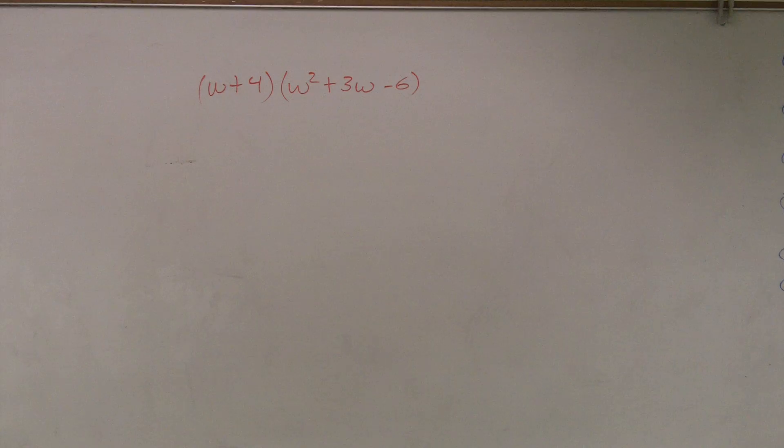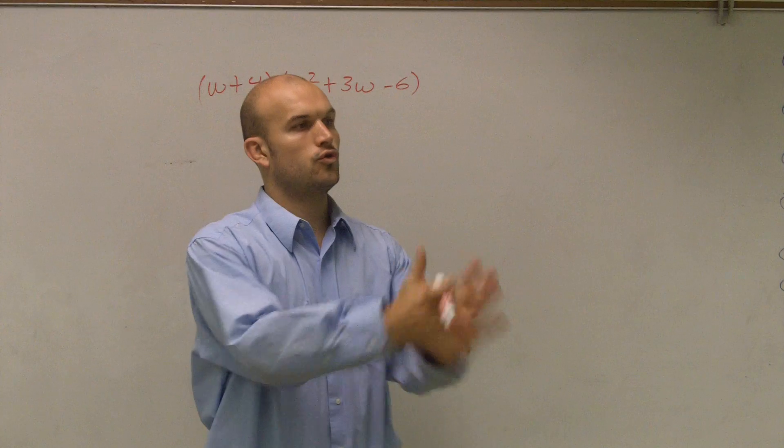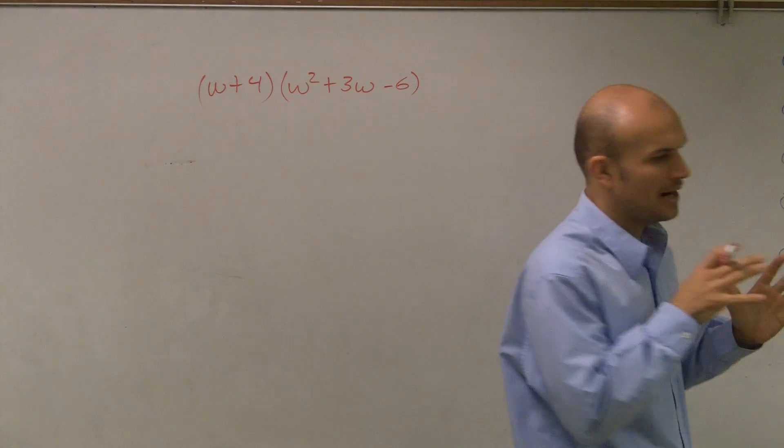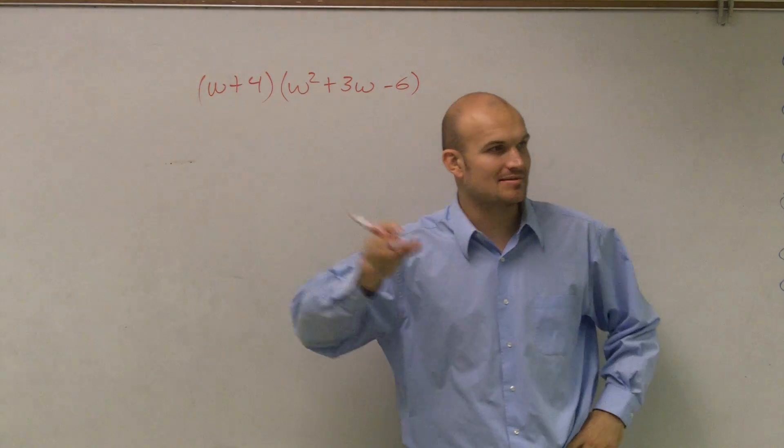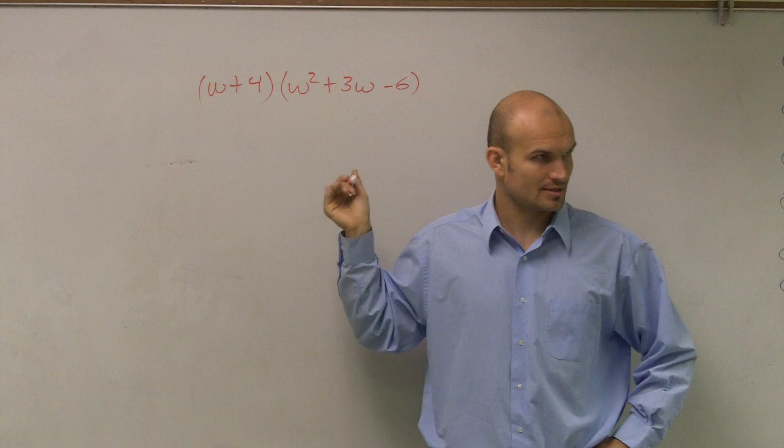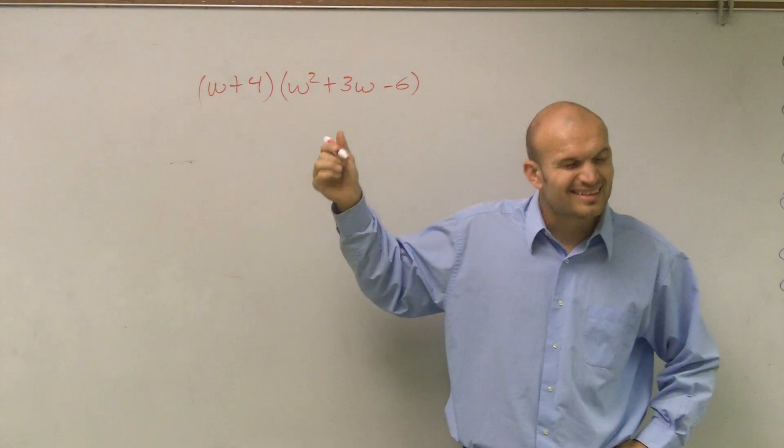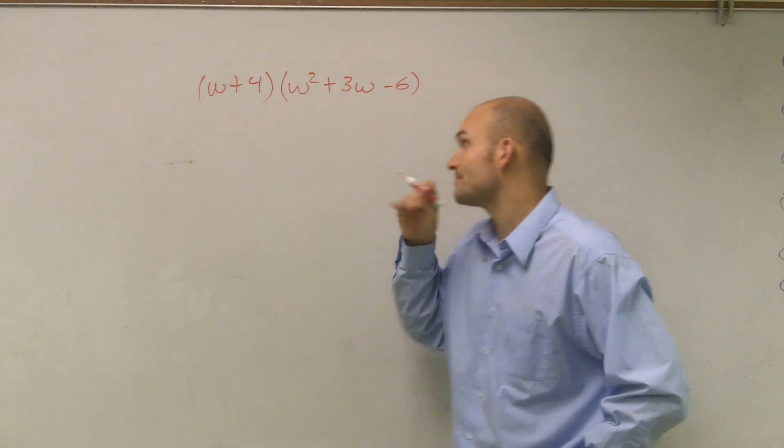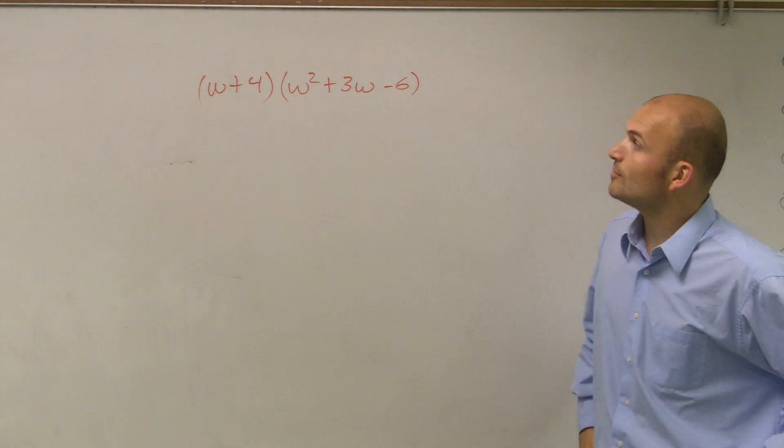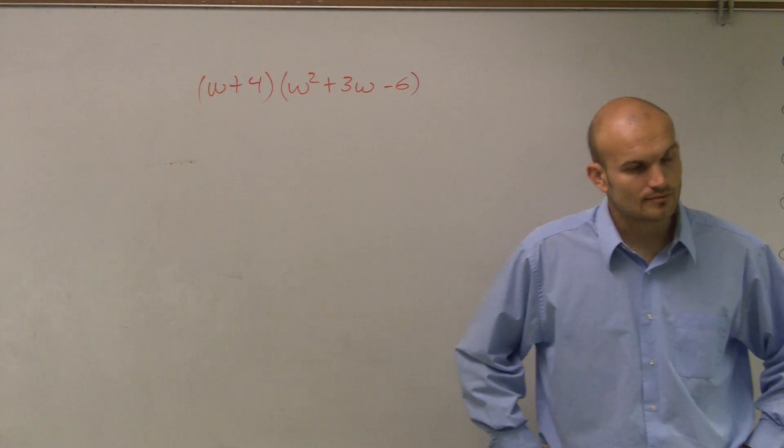Alright, so we've been working on doing binomials times binomials. You're writing this one down, right? Because this was part of your homework. Write it down on a sheet of paper so you have it, especially if you didn't have your homework done three times, please. So we have w plus 4 times w squared plus 3w minus 6, alright?